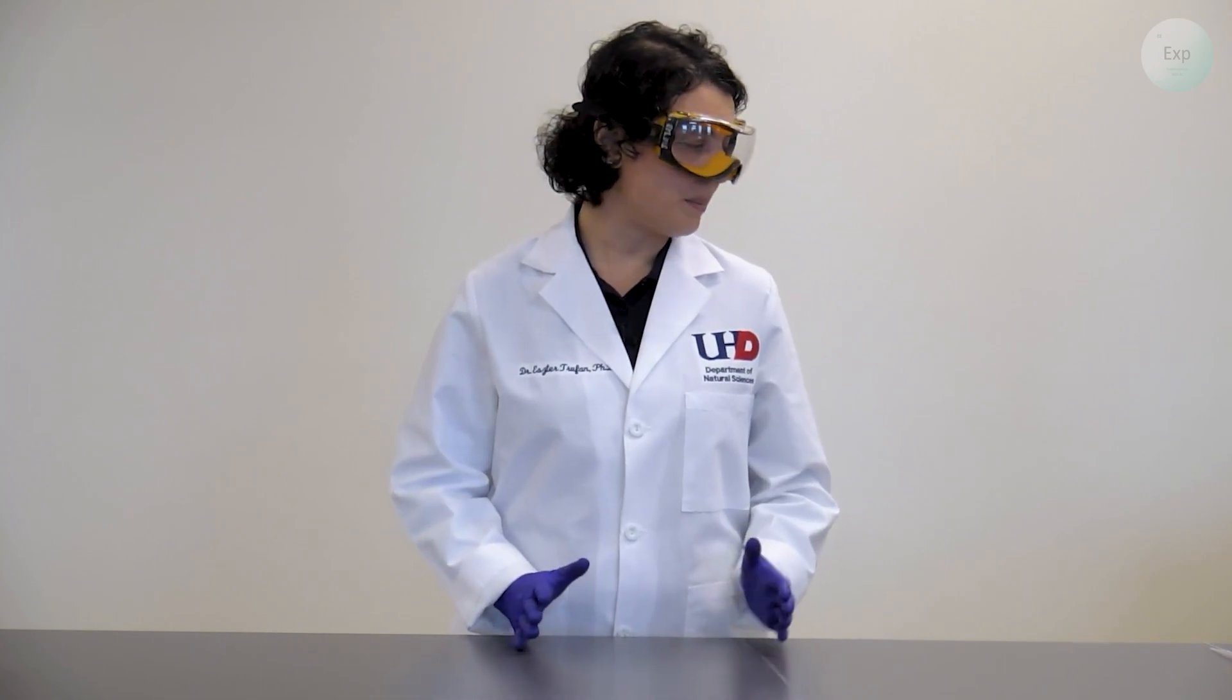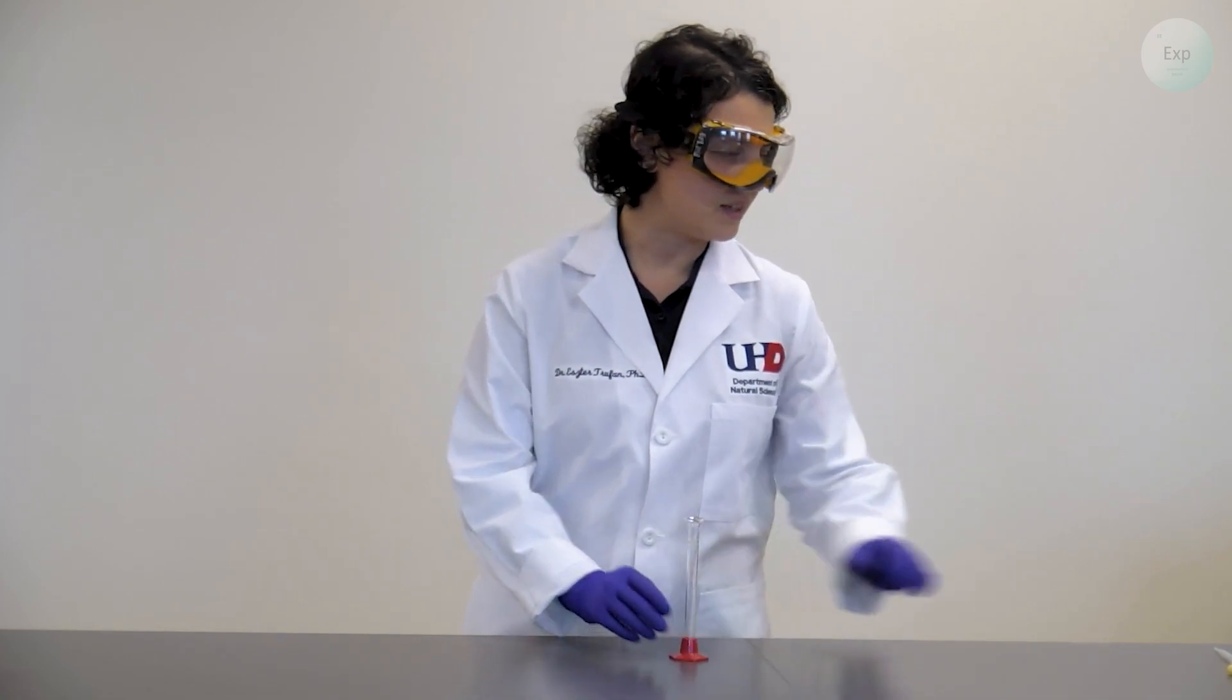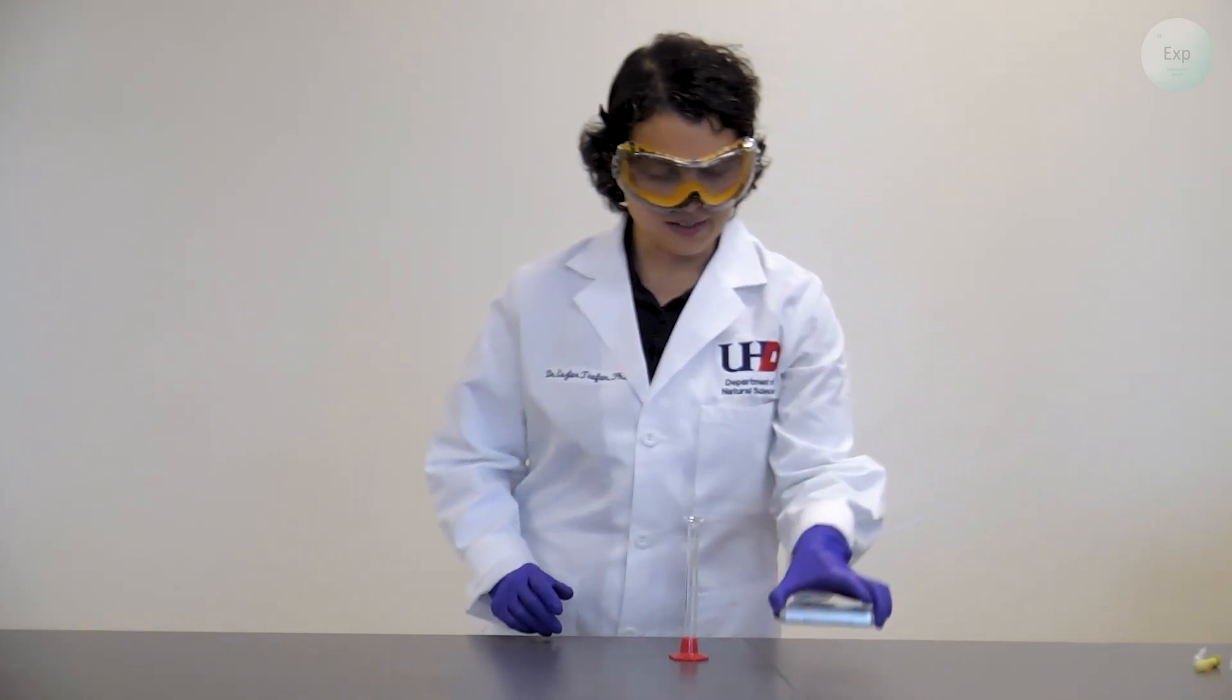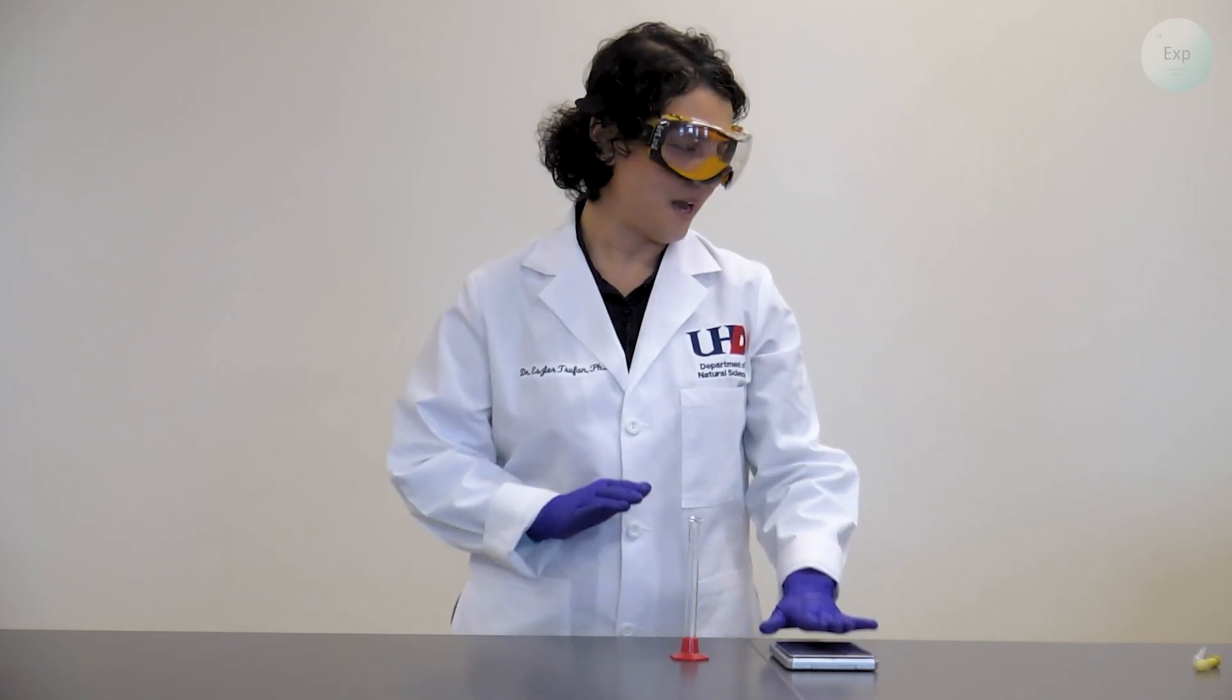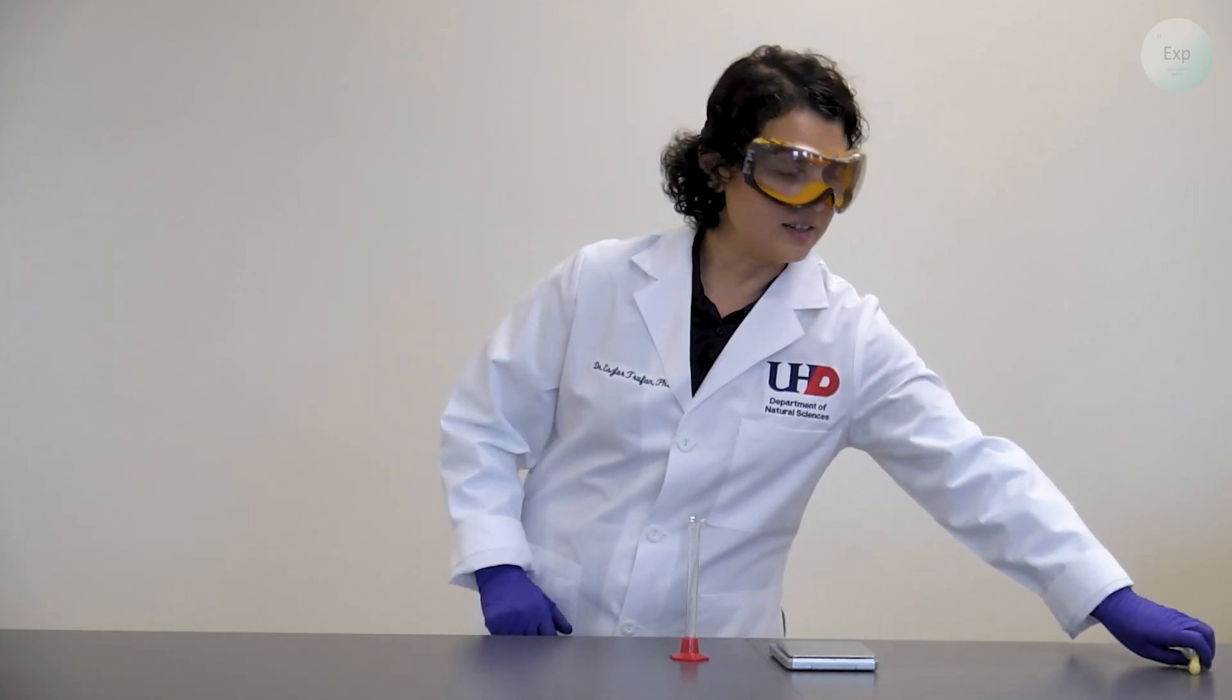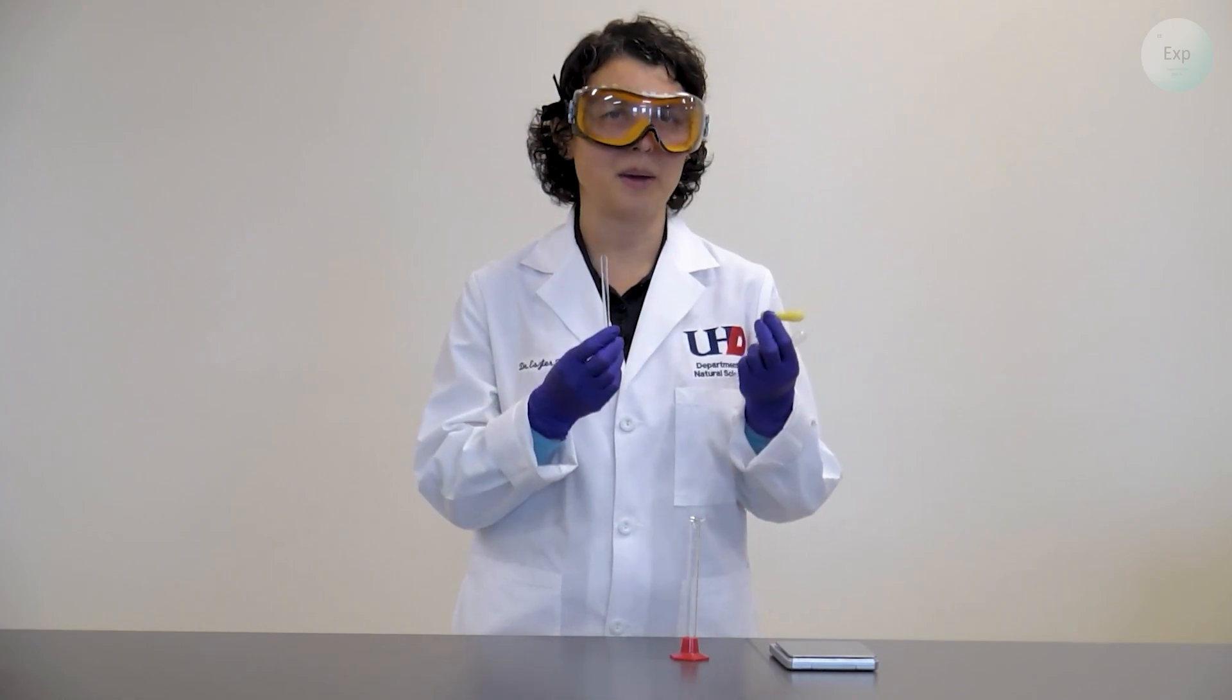The first thing that we are going to do is collect our equipment. We're going to need a 10 milliliter graduated cylinder. We're also going to need a scale, and to transfer things successfully without spilling, we'll need a pipette.